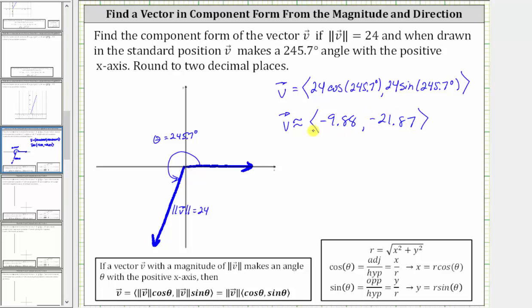Notice how this matches our graph because both the x and y components are negative, and the vector lies in the third quadrant. I hope you found this helpful.